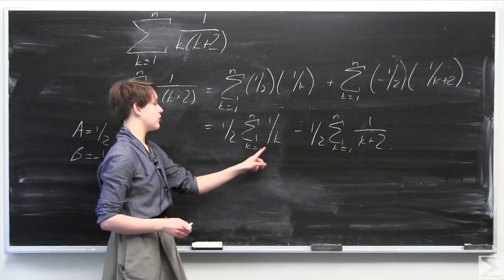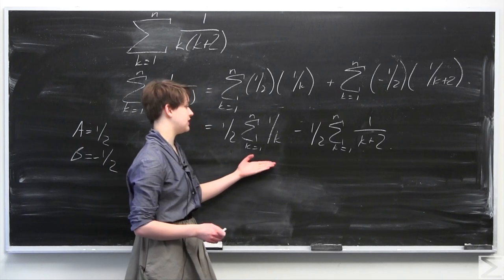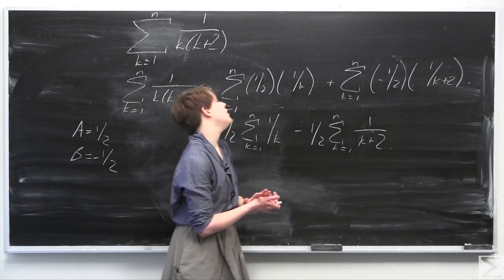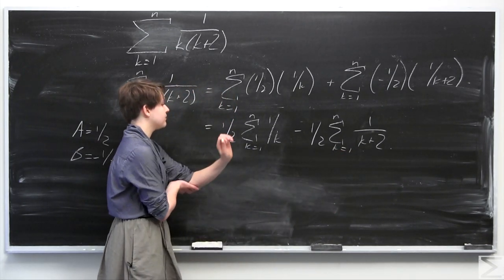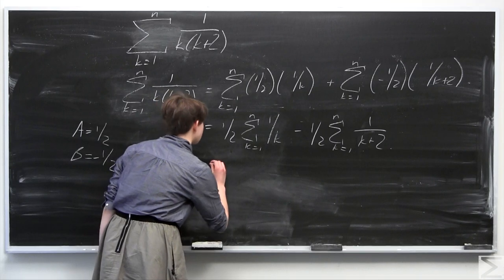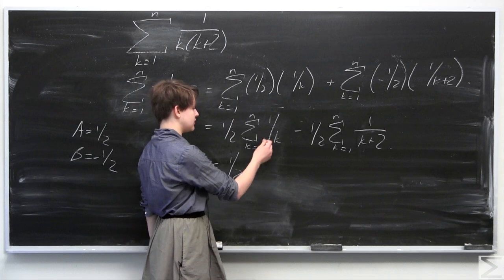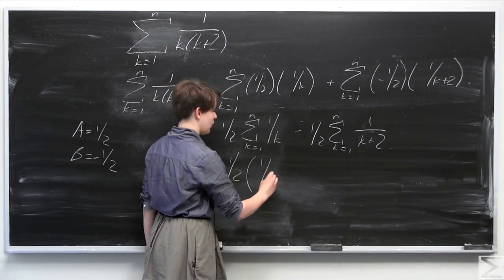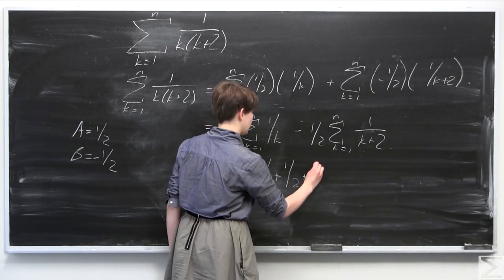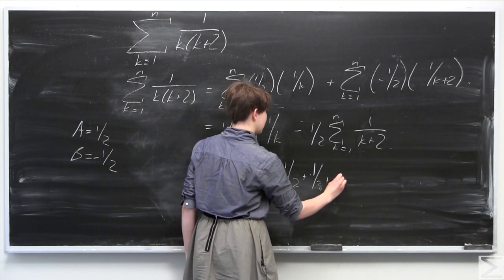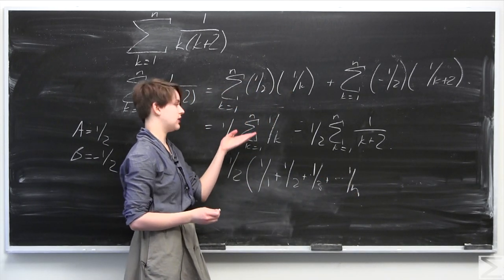Writing out the terms explicitly: for the first sum, 1 half times the sum from k equals 1 to n gives 1 over 1 plus 1 over 2 plus 1 over 3, and so on up to 1 over n.